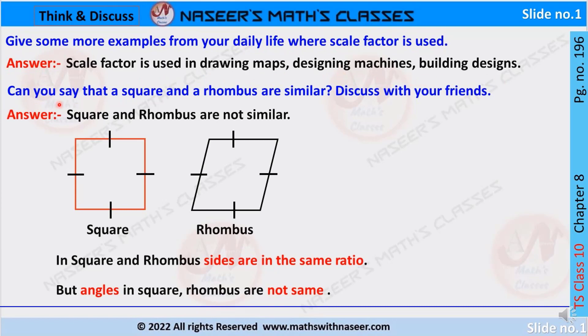Second question: can you say that a square and a rhombus are similar? Discuss with your friends. In a square, all sides are of equal length and each angle is equal to 90 degrees. In a rhombus, all sides are equal, but each angle is not equal to 90 degrees. So we can say that in square and rhombus, sides are in the same ratio, but angles in square and rhombus are not the same.